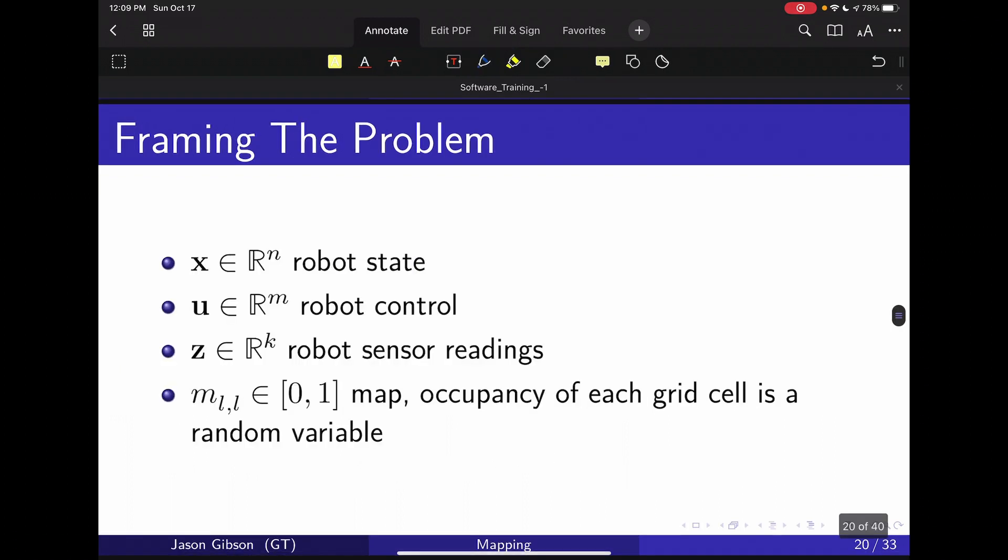And then let's go back to some notation. So remember x, or vector x, is always going to represent our robot state. u will represent a control, z will represent our sensor readings, and then we'll have this m which is a probability between zero and one, and this will represent the probability that each grid cell is occupied.